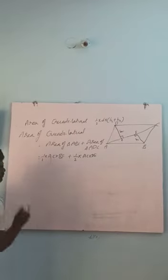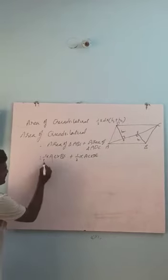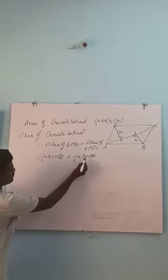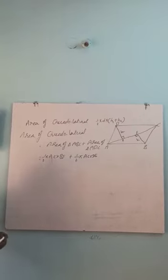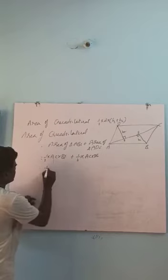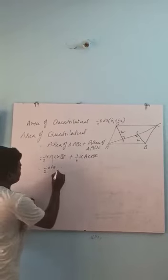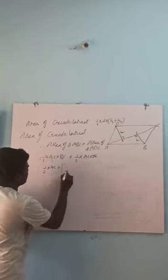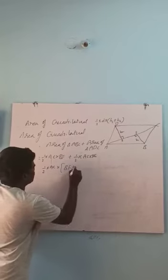In these two terms, what is common? Half is common, AC is common. So we use the distributive property. Half AC is taken outside. That is half into AC, and the remaining is BF plus DE.